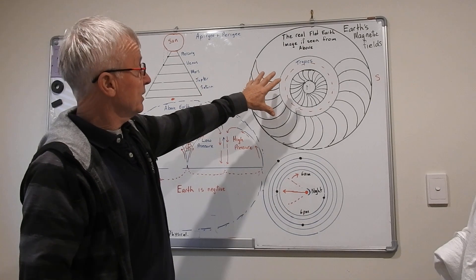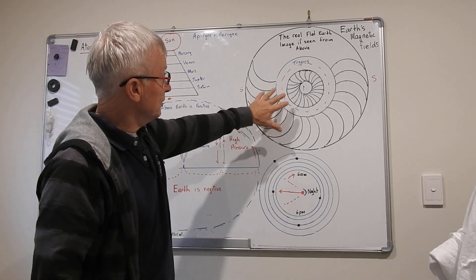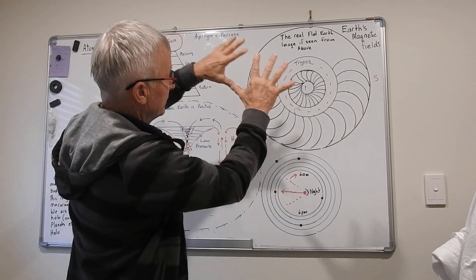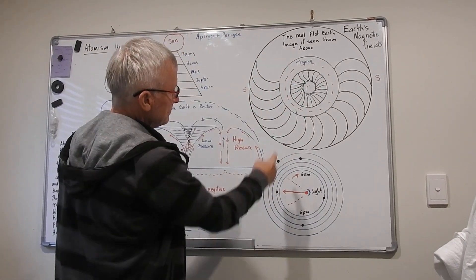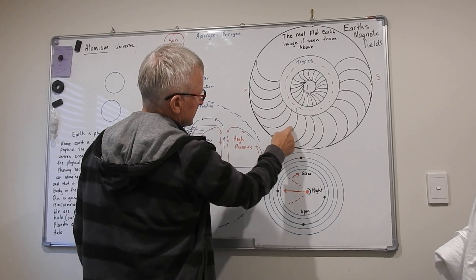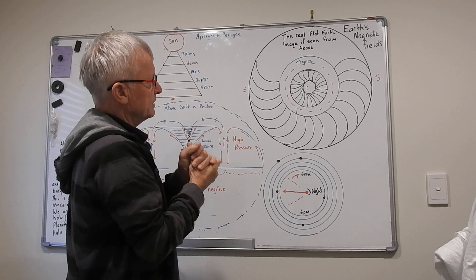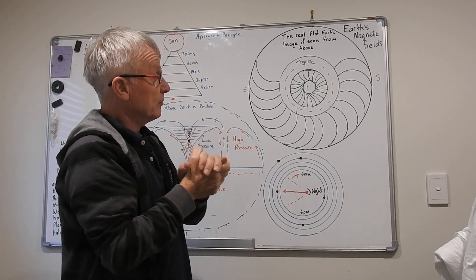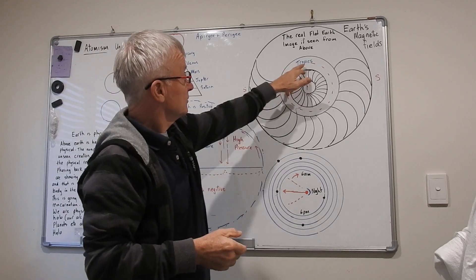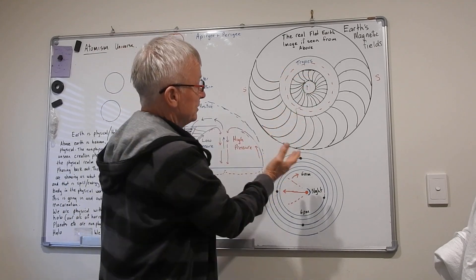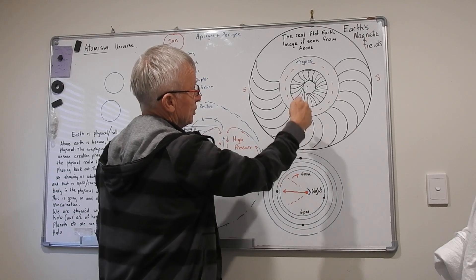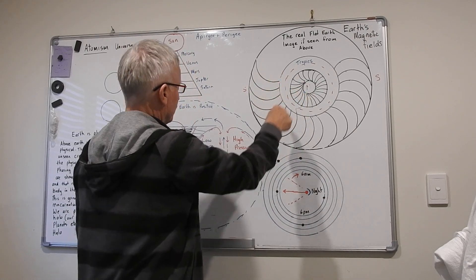Looking down on the flat earth, these are the magnetic field lines if we could see the magnetic field from above earth. Each one of these magnetic fields represents one of these isotropic lines - ISO being the Greek word for equal, and tropos meaning change.